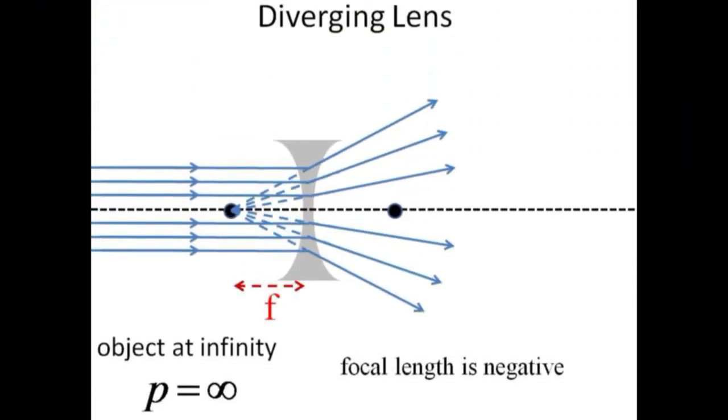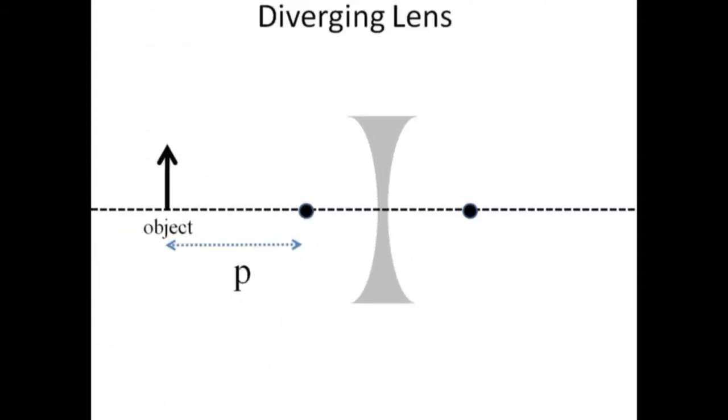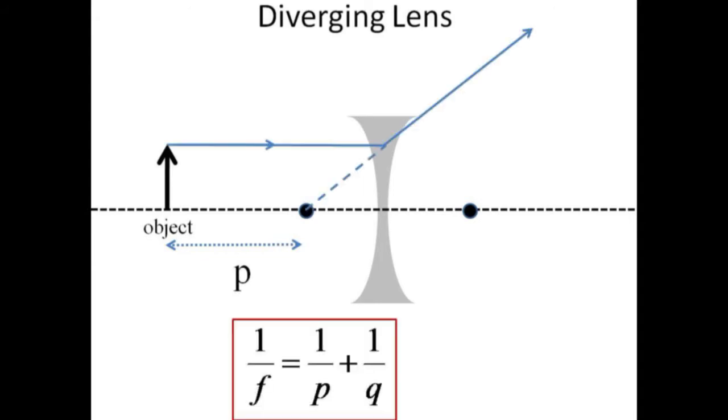A diverging lens with its negative focal length causes parallel rays from a distant object to diverge as if they originated at the focal point. A real object shown to the left of the diverging lens will form a virtual image also on the left side of the lens. The ray emerging from the tip of the object parallel to the optical axis diverges as though it came from the focal point on the left.